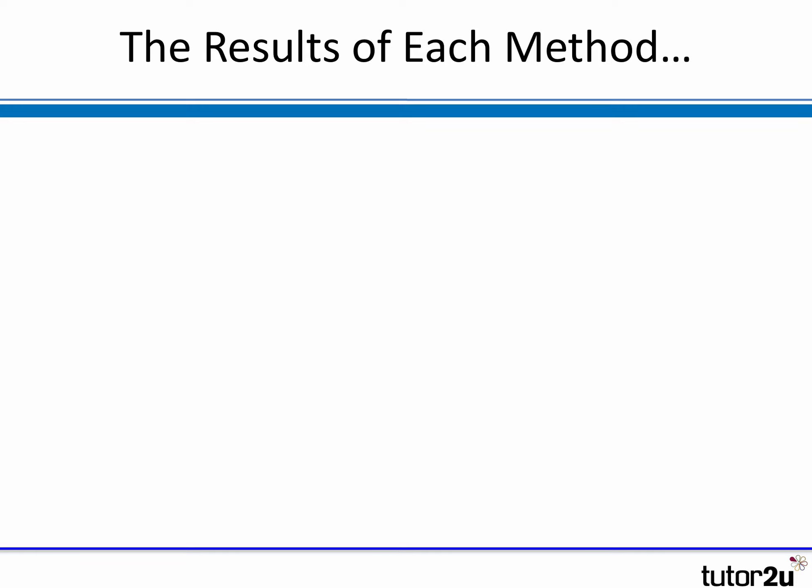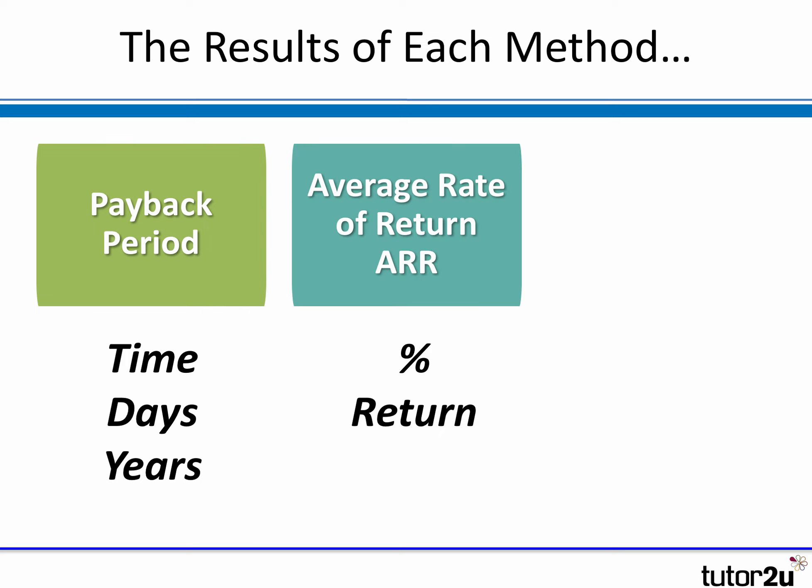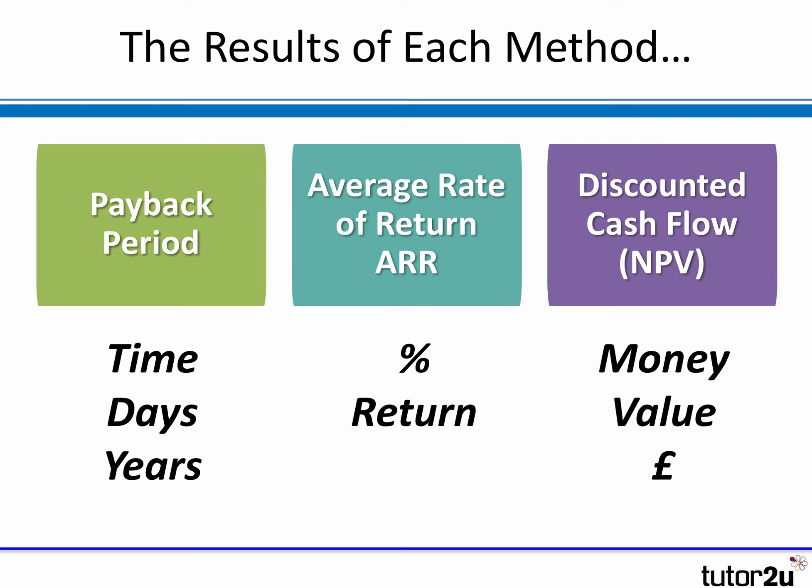The results of each method of investment appraisal vary. The payback period is measured in terms of time — for example, two years and five months. The ARR is measured as a percentage, a percentage return on investment. And discounted cash flow techniques are measured in currency terms, in monetary value — for example, pounds or dollars.